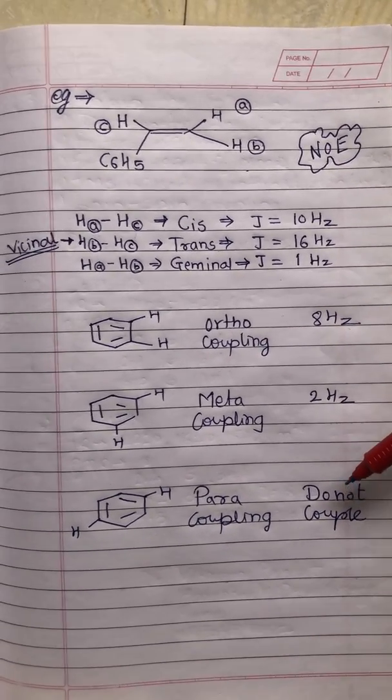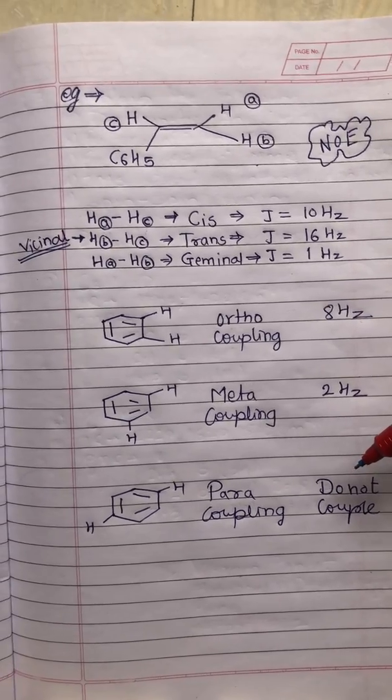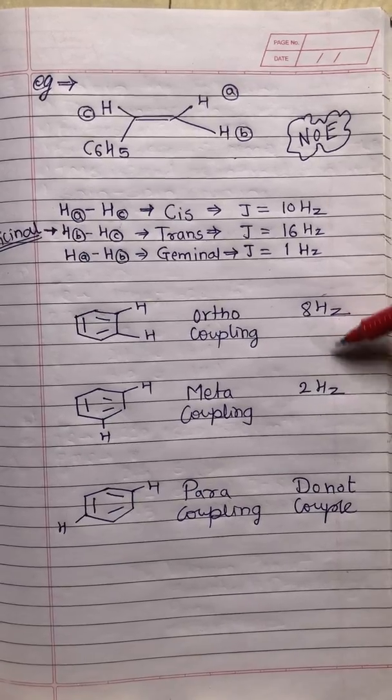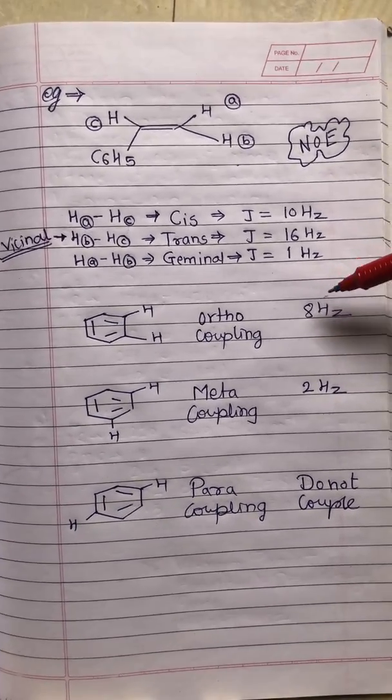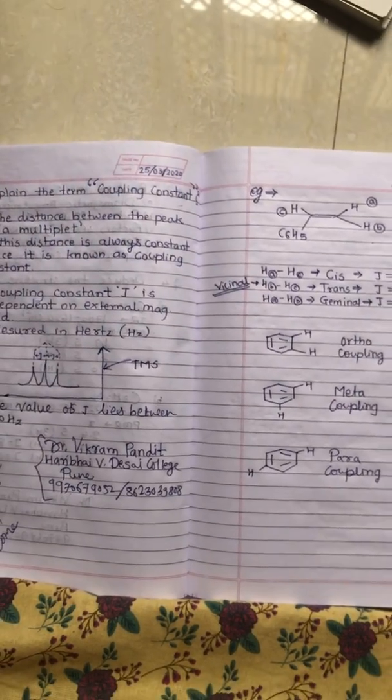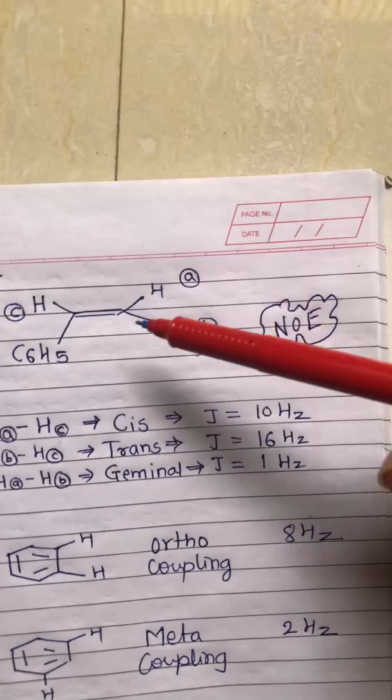These values help distinguish the protons present on the benzene ring. This coupling constant is very important for solving problems. This alkene has different protons.